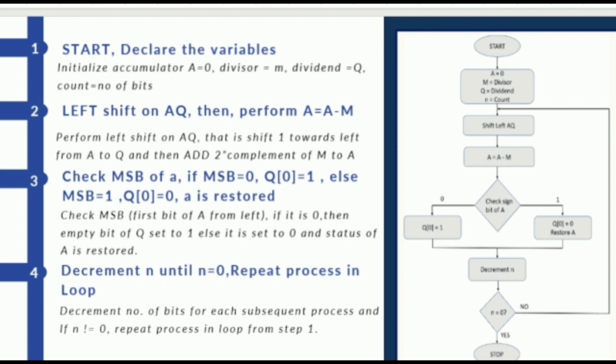In the next step, there is MSB which stands for most significant bit. If A_n, which is the most significant bit, is 1, then Q_0, which is the least significant bit, becomes 0 and A is restored. And this is why this algorithm is named as division restoring algorithm. And if A_n is 0, then Q_0 becomes 1.